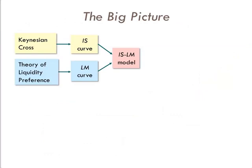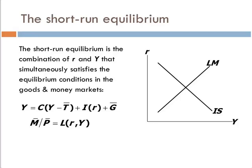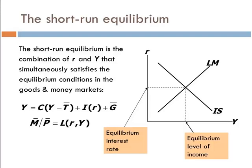So where are we with the big picture? We've derived the IS curve and the LM curve, so let's put the two together and create the IS-LM model. Here's our IS curve and our LM curve, graphed on the same set of axes so we can cross them. Short-run equilibrium is the point where the goods market clears and the money market clears — the intersection of the IS and LM curves gives us our short-run equilibrium interest rate and level of output.